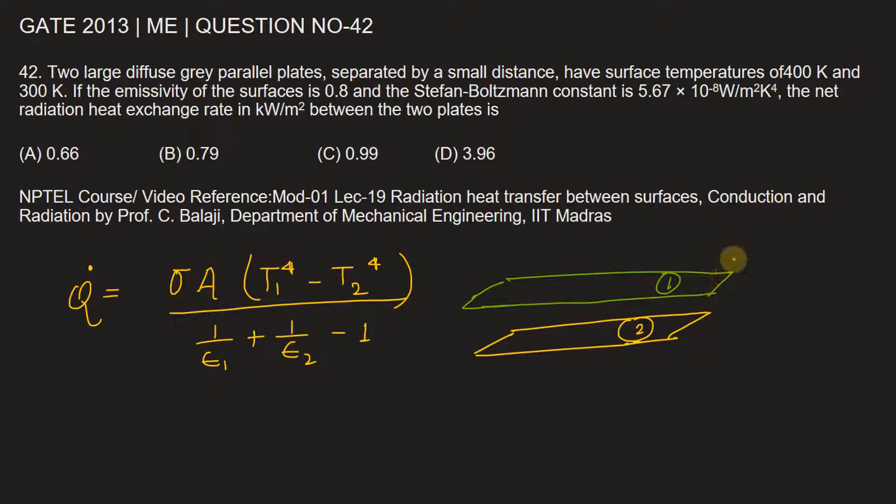Now for plate one, the temperature T1 equals 400 Kelvin and T2 is 300 Kelvin. Epsilon 1 and epsilon 2 are equal, so epsilon 1 equals epsilon 2 equals 0.8. The emissivity of both plates are equal.